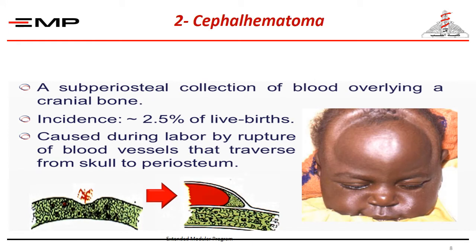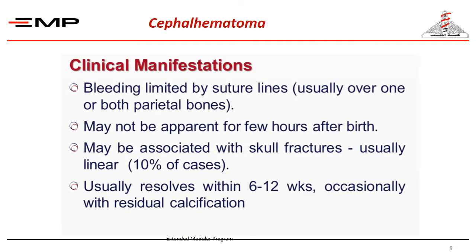Number two: cephalhematoma. This is a subperiosteal collection of blood overlying the cranial bone. It occurs in about 2.5% of deliveries, caused during labor by rupture of blood vessels that traverse from the skull to the periosteum. Clinical manifestations: bleeding is limited to the suture lines. It may not be apparent for a few hours after delivery and may be associated with skull fractures in about 10% of cases.